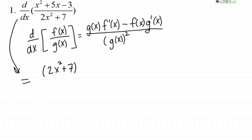In this case that's 2X squared plus 7. Then the next piece is the derivative of the top, F prime of X. For now I'm just going to write that as the derivative, d/dx, of the numerator, X squared plus 5X minus 3. That's G of X times F prime of X.